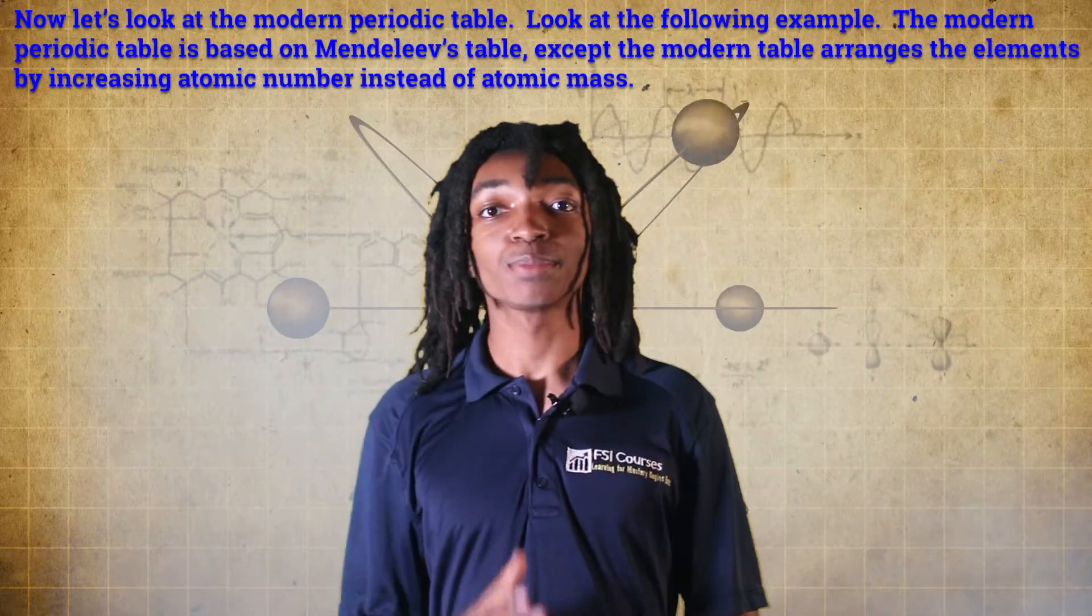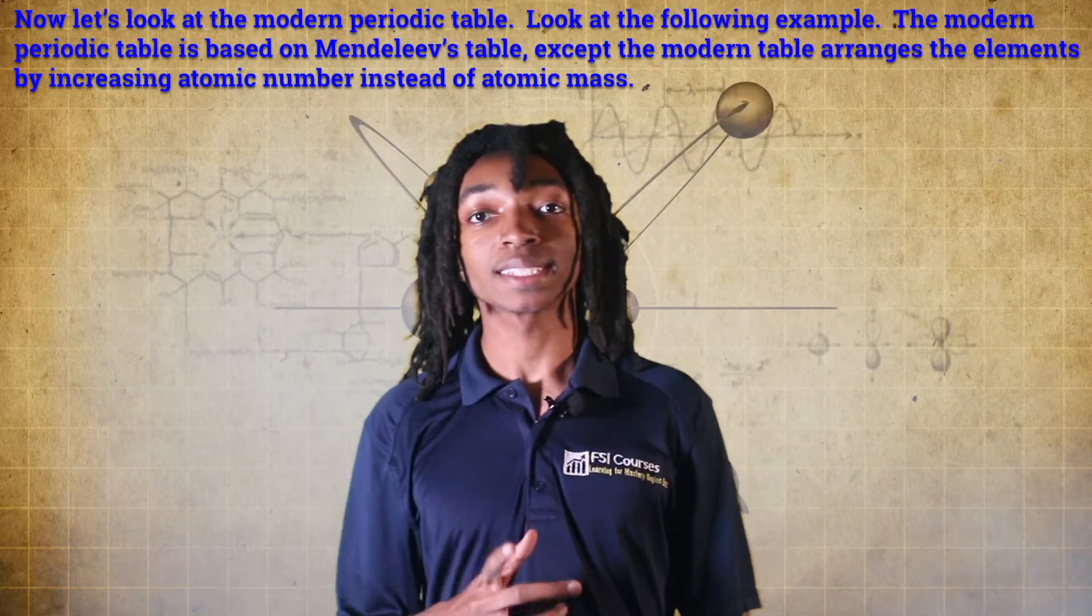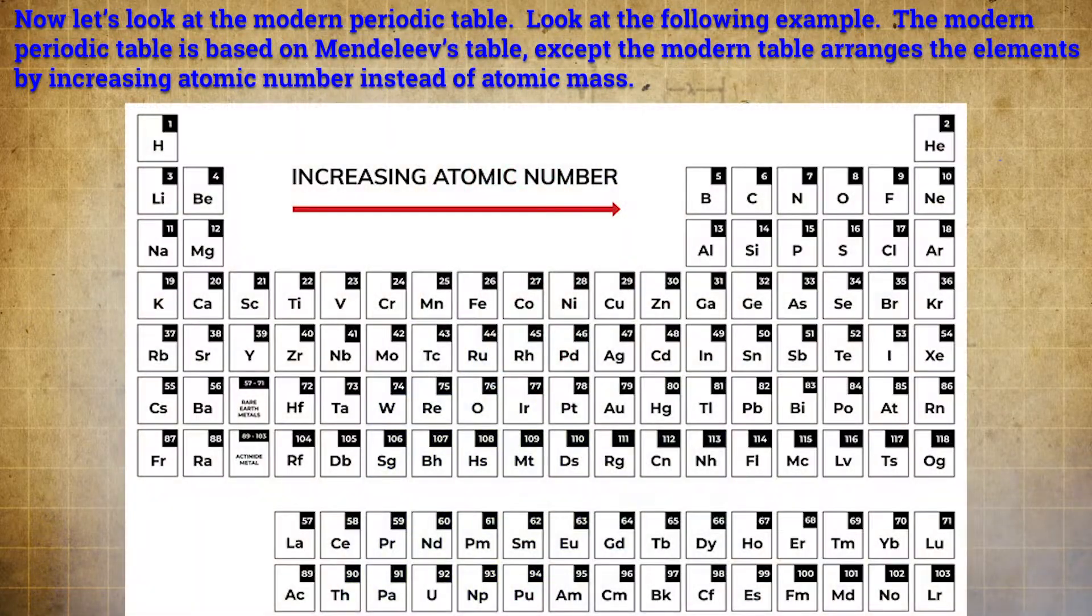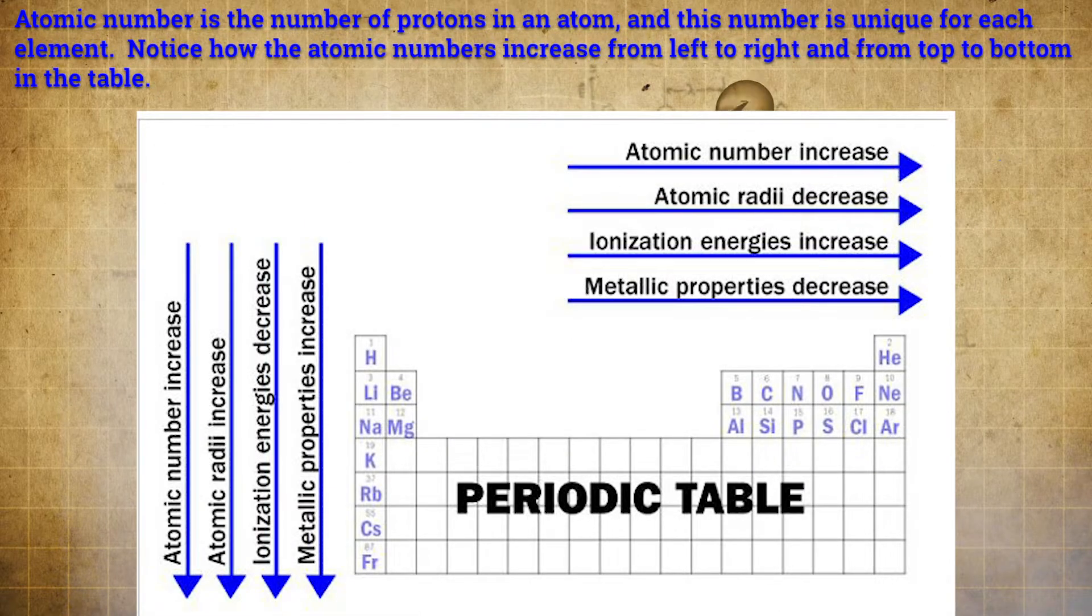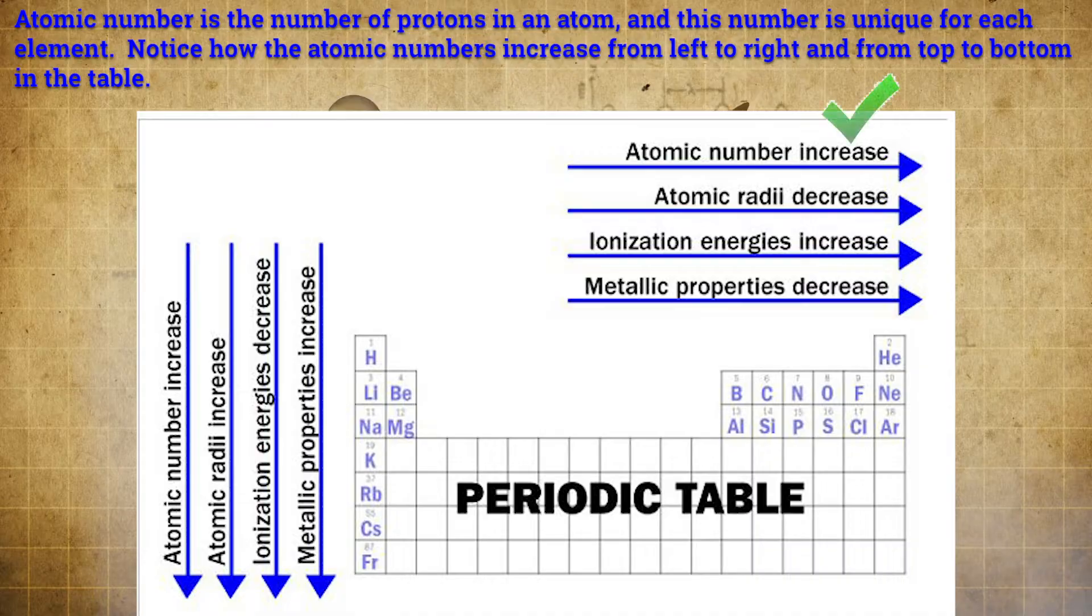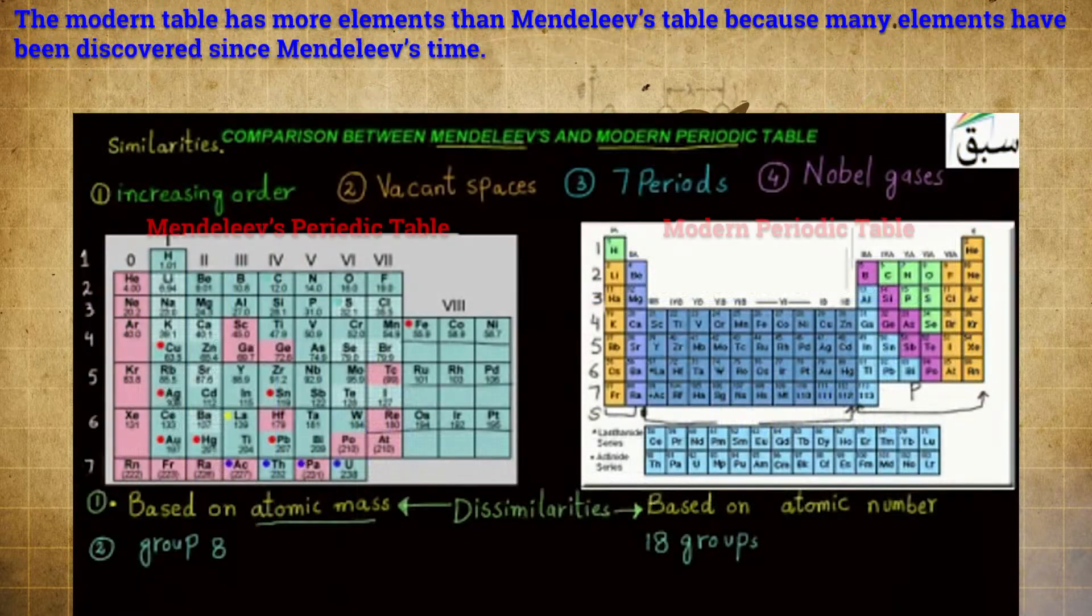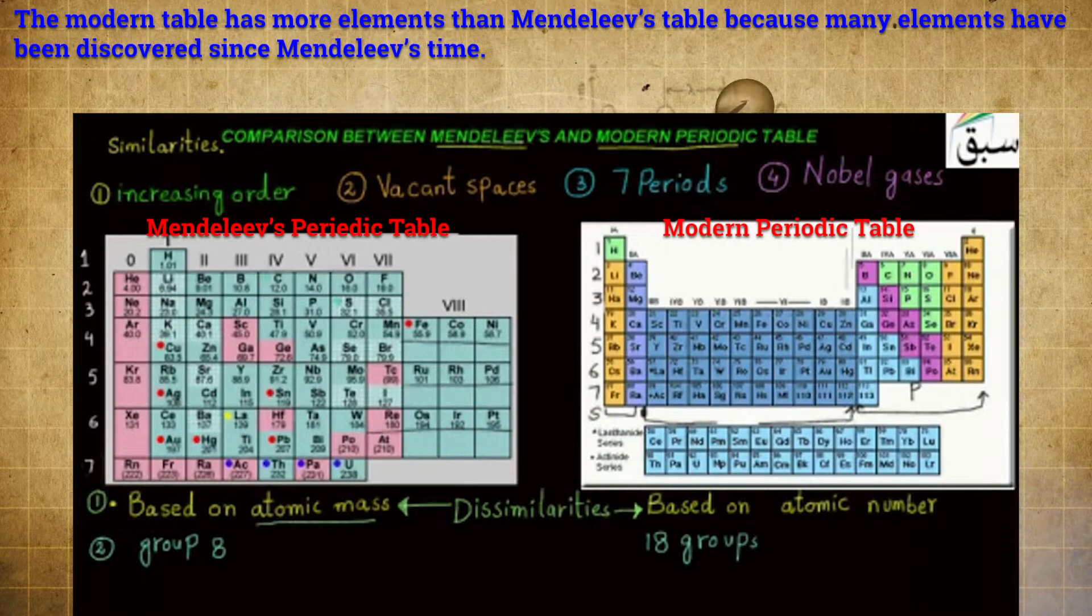Now let's look at the modern periodic table. Look at the following example. The modern table is based on Mendeleev's table, except the modern table arranged the elements by increasing atomic number instead of atomic mass. Atomic number is the number of protons in an atom, and this number is unique for each element. Notice how the atomic numbers increase from left to right and from top to bottom in the table. The modern table has more elements than Mendeleev's table because many elements have been discovered since Mendeleev's time.